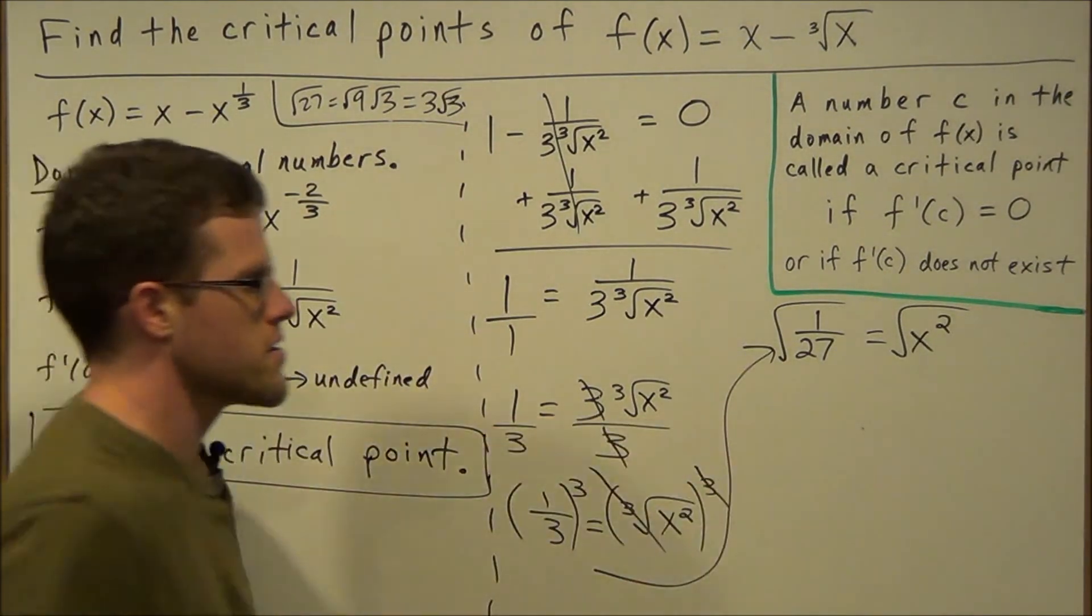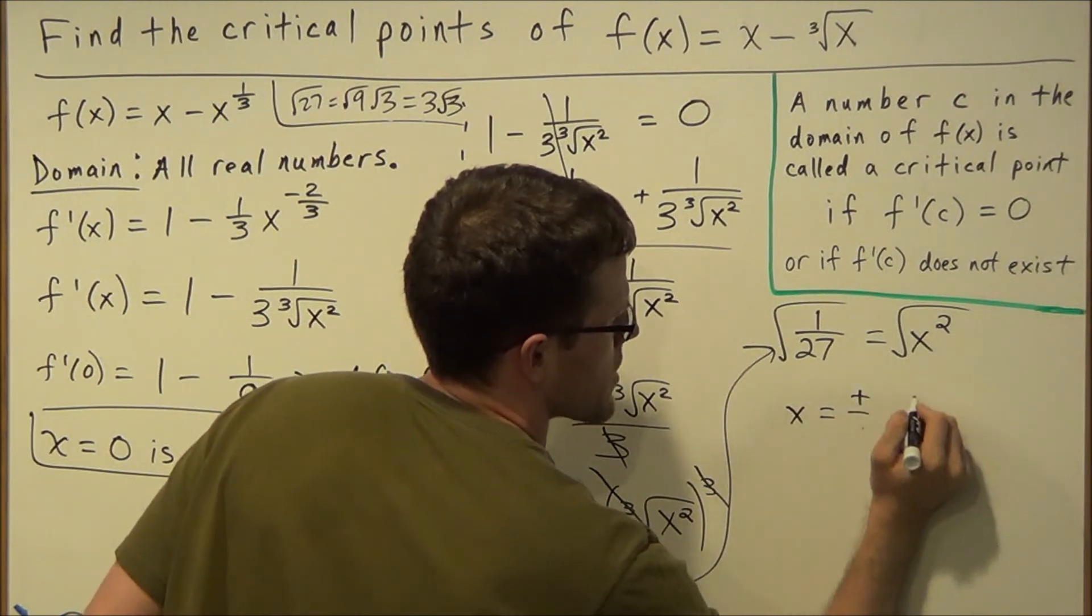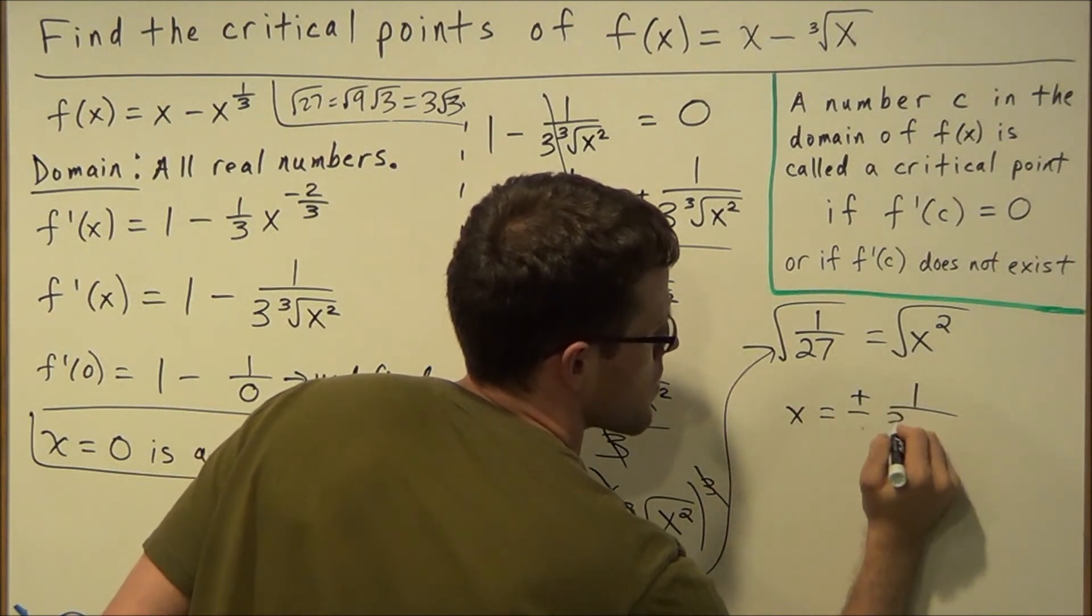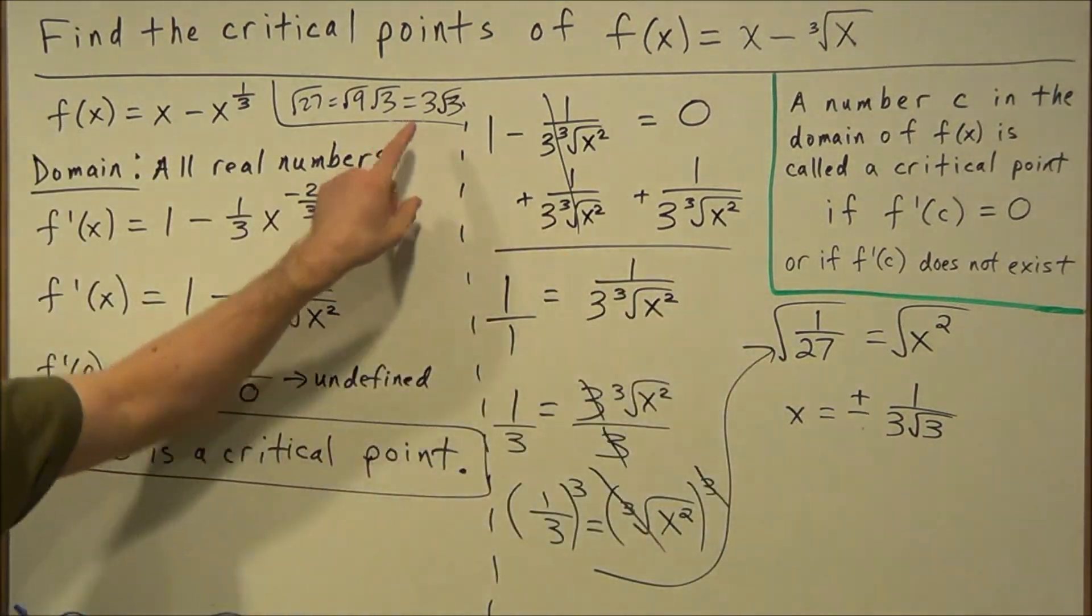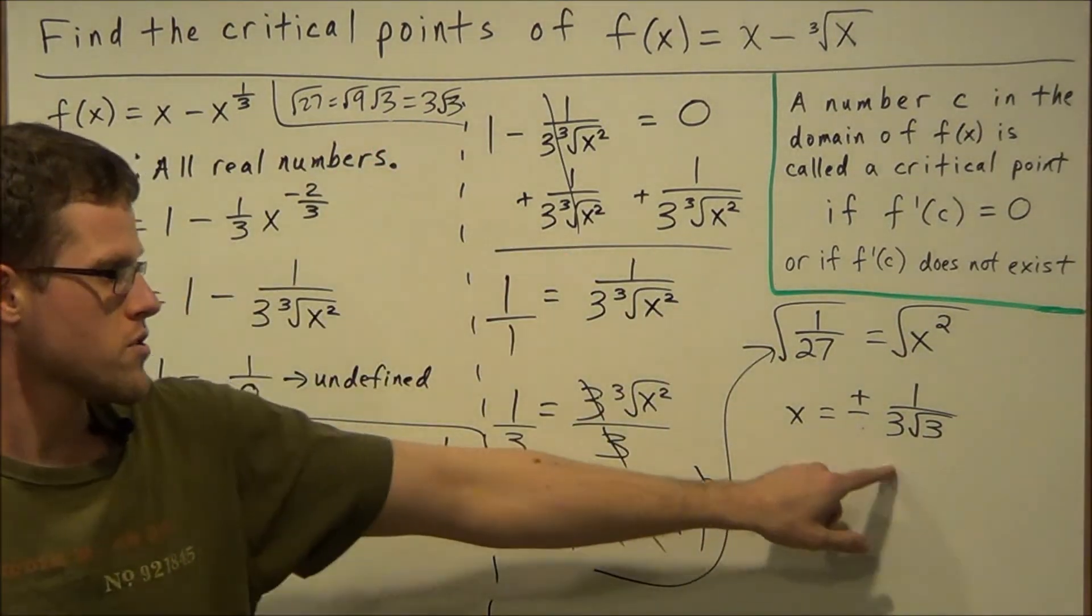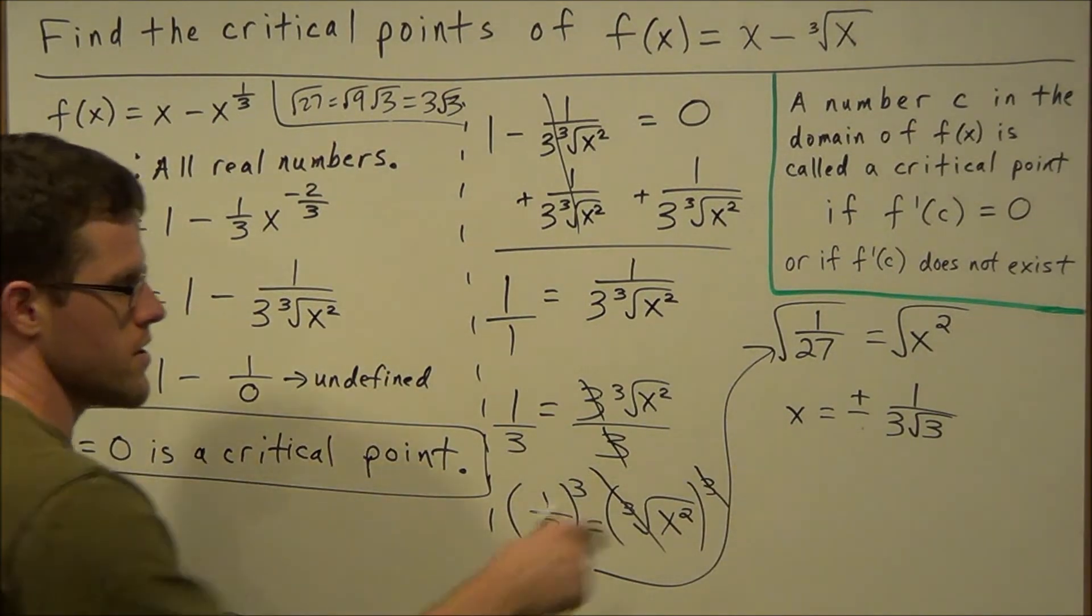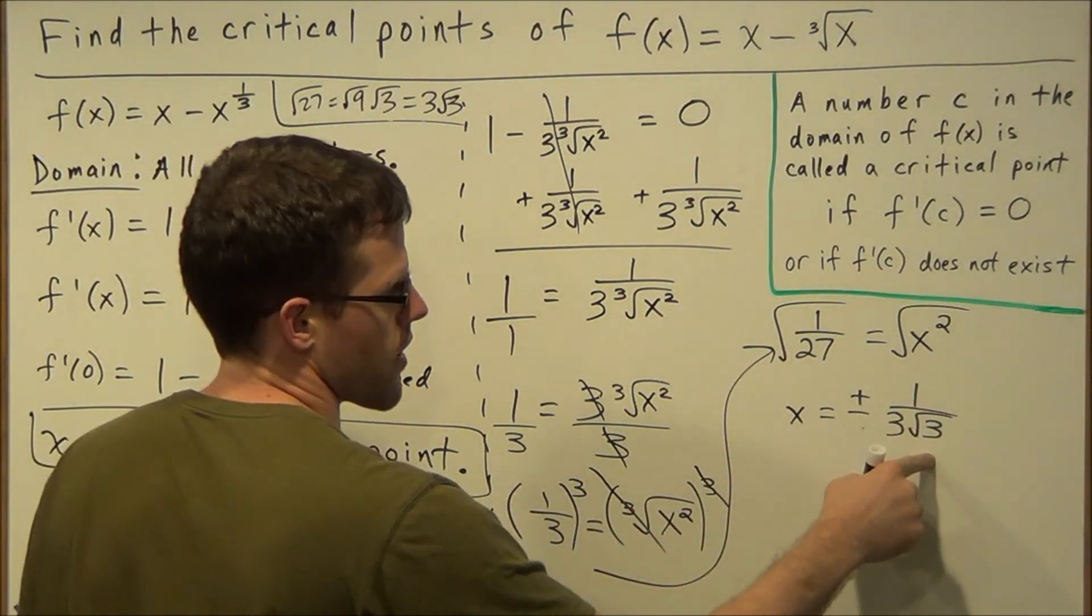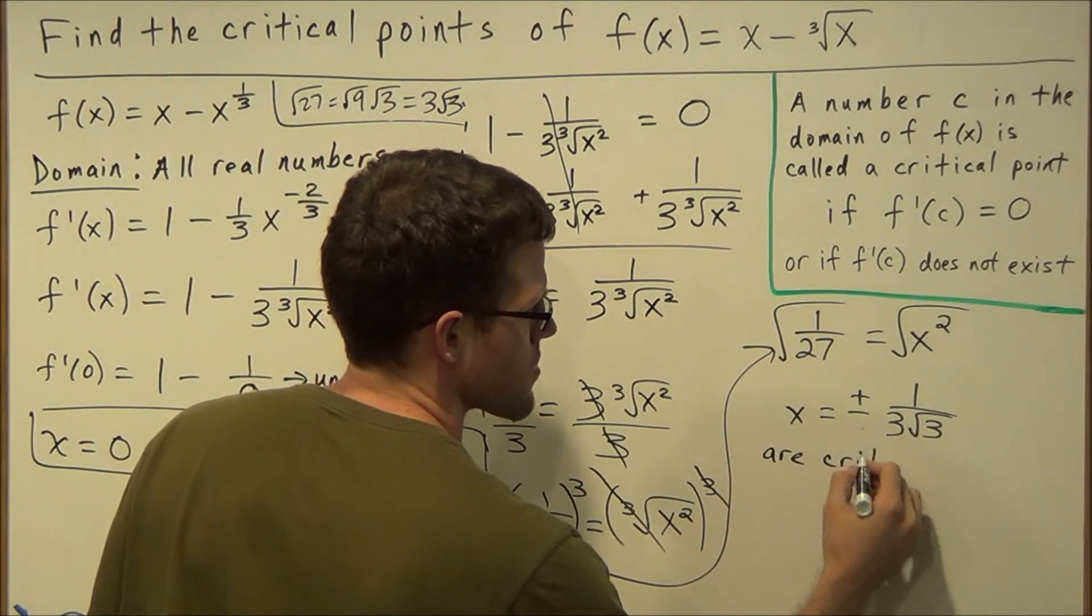When we simplify this, we're going to have x equals plus or minus 1 over 3 radical 3. So this radical 27 part will simplify to 3 radical 3. These are our last two critical values. So we have x equals plus minus 1 over 3 radical 3 are critical values.